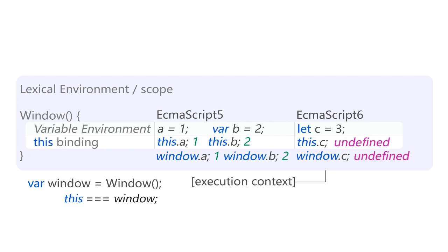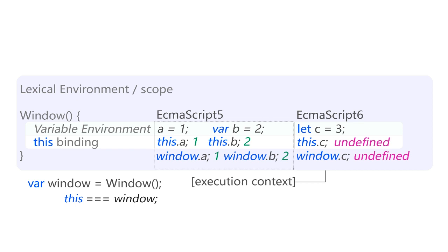Let keeps the variable definition to the variable environment and doesn't touch the this binding, as you can see — that is not so in ECMAScript 5. We have code like this from 2009 when ECMAScript 5 came out, but generally when programming you don't even concern yourself with things like this. At the core level, this is the distinction between defining variables with var and let in two different specifications of JavaScript.